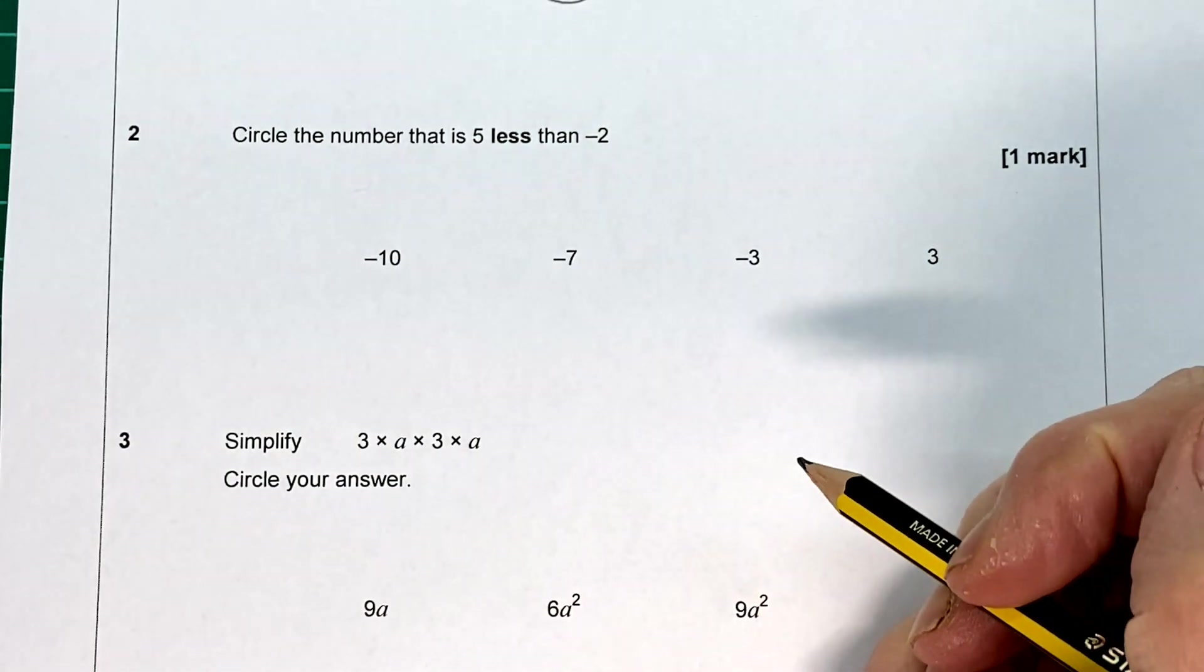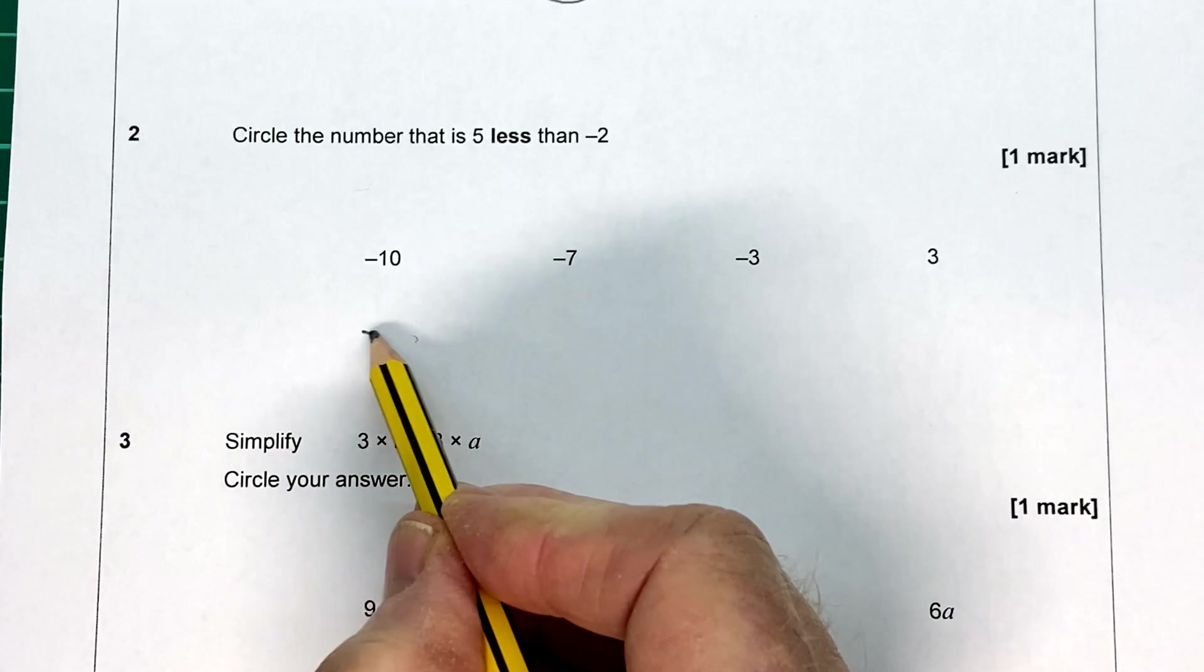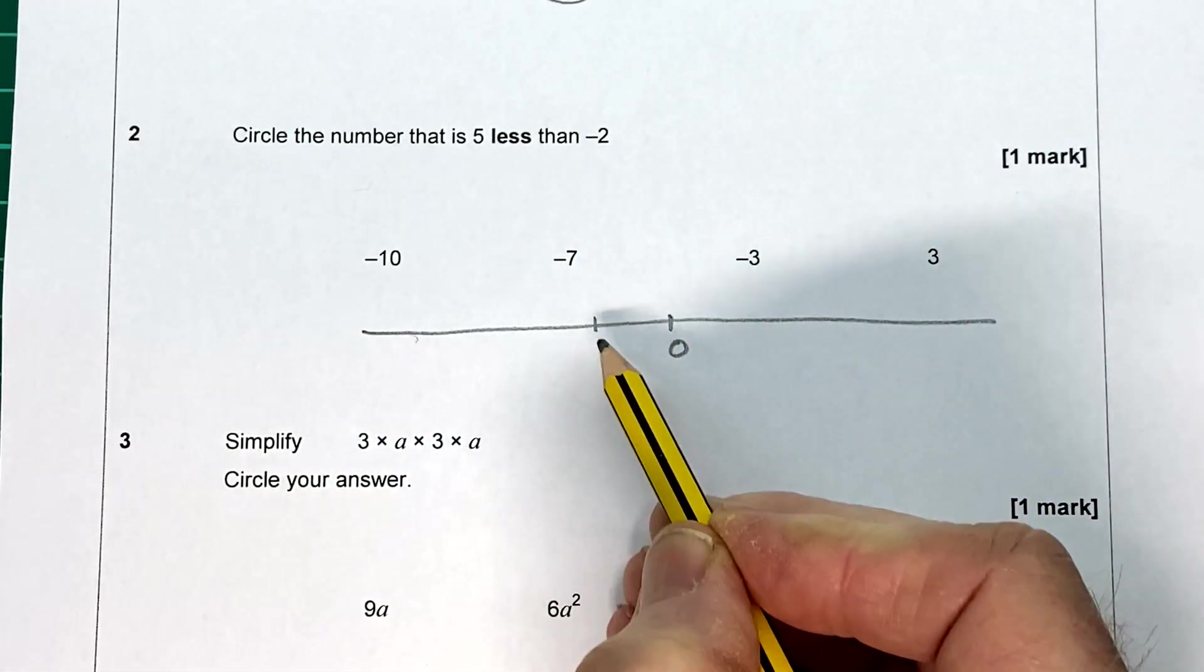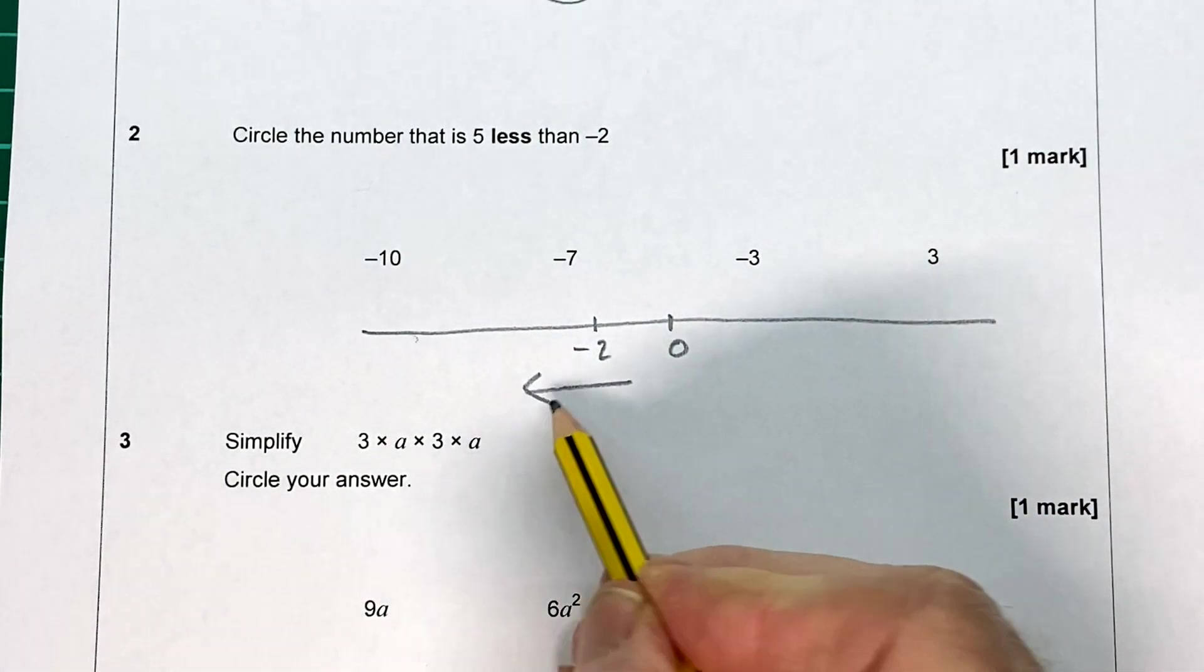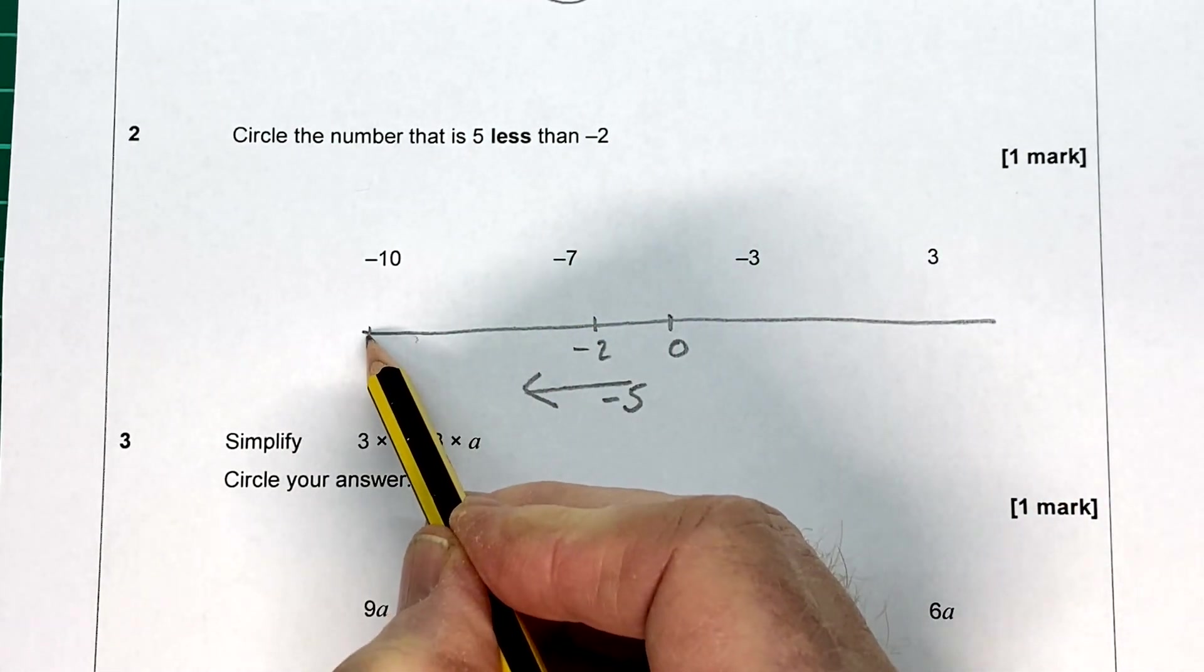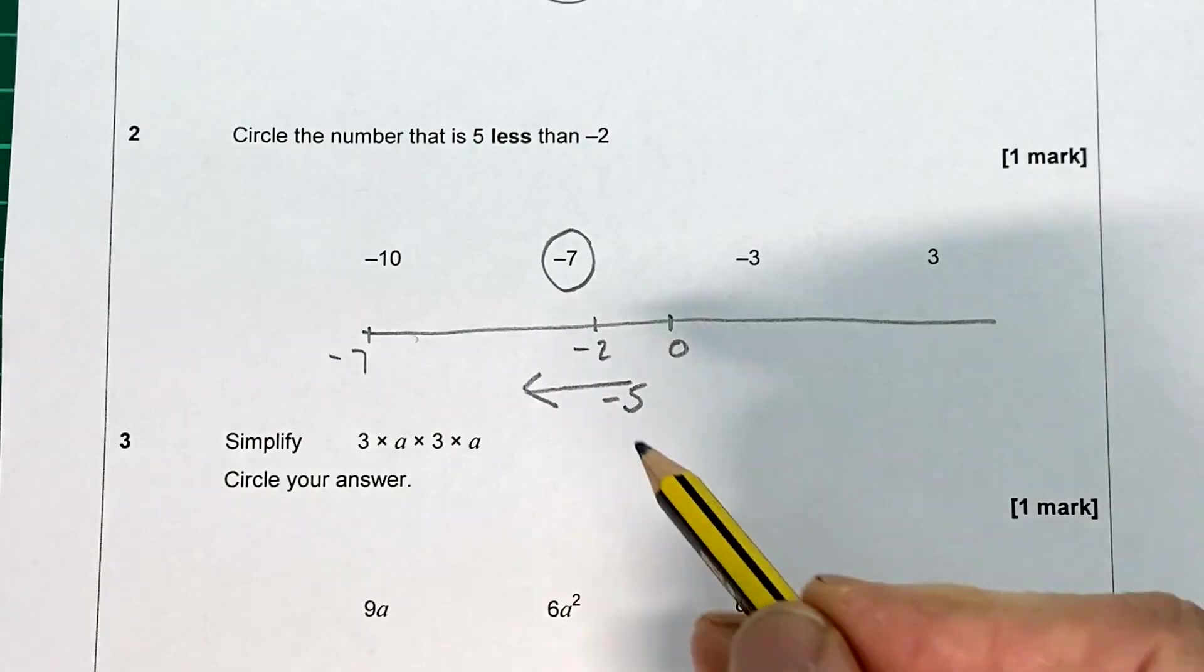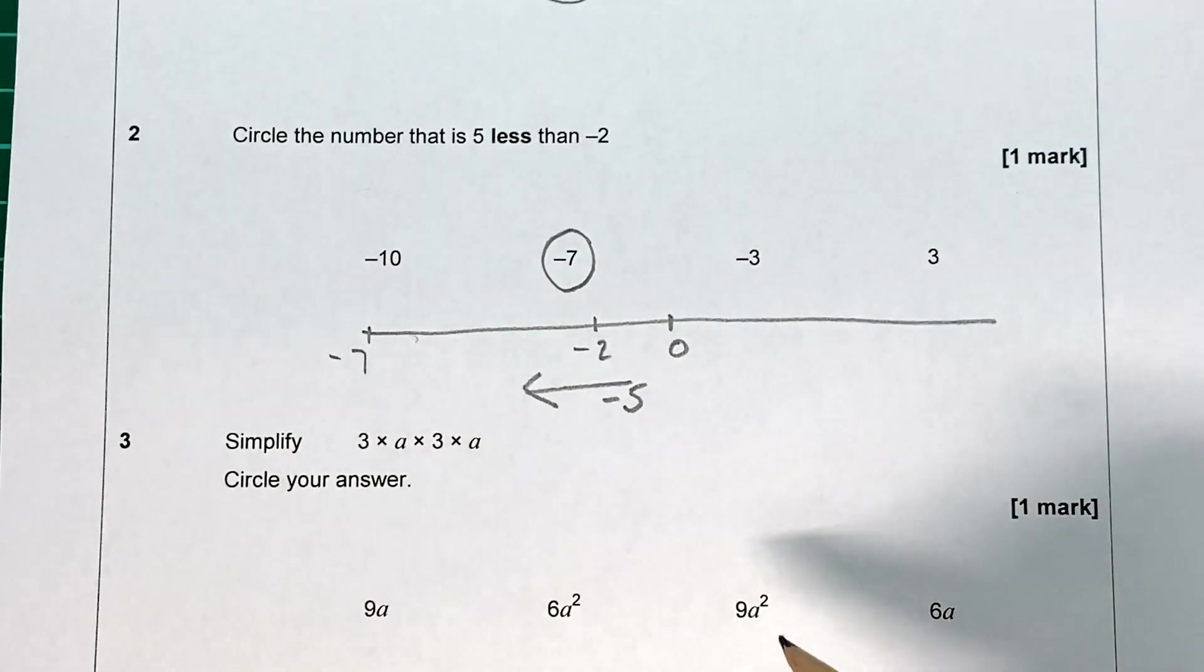Question two. Circle a number that is five less than negative two, or minus two. So let's have a look at a number line. There's a zero. Minus two is there. And we want five less. Well we know we've got to go that way because we're doing five less. So we're taking away five. So five less that way is going to get us to negative seven. So that's that one there. Remember if you're taking, you go that way. If you're adding, you go that way.